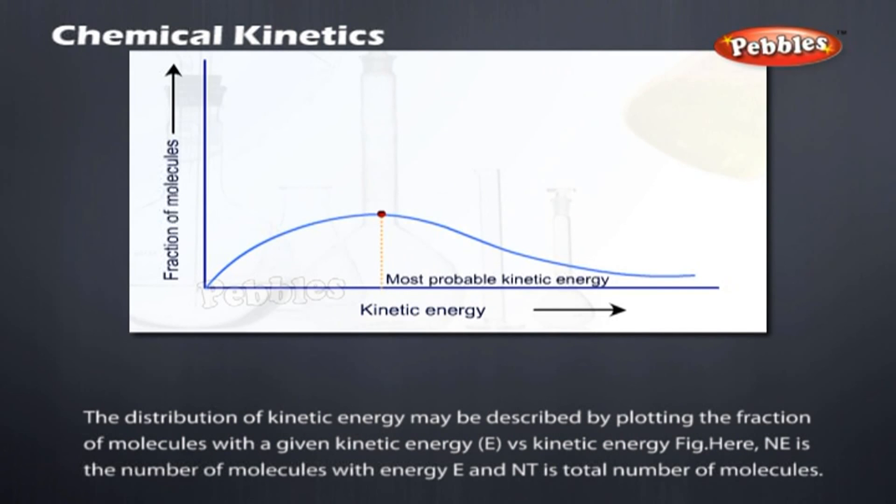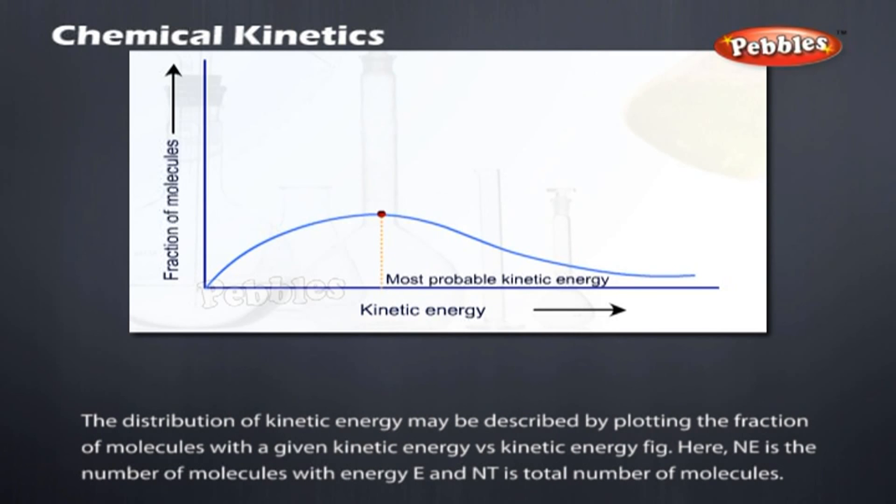The distribution of kinetic energy may be described by plotting the fraction of molecules with a given kinetic energy E versus kinetic energy. Here, NE is the number of molecules with energy E and NT is total number of molecules.